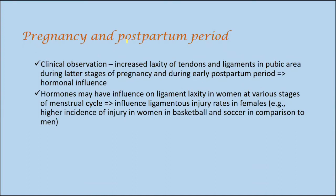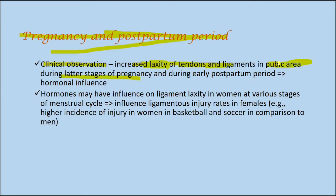The next factor is pregnancy and the postpartum period, which also affects the biomechanical properties of tendons and ligaments. The clinical observation is increased laxity of the tendons and ligaments — laxity meaning a loss of stiffness. During the later stages of pregnancy, there is decreased stiffness and increased laxity of the tendons and ligaments in the pubic area. Many women face this problem during the later stages of pregnancy and during the early postpartum period.